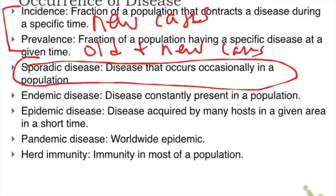Endemic means a disease is constantly present in the population. For example, in Agusan, malaria is constantly present all year round — so we could say malaria is endemic in Agusan.